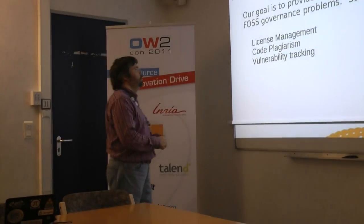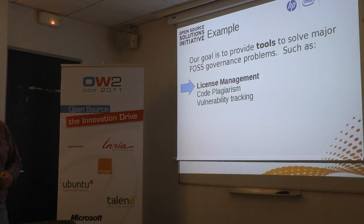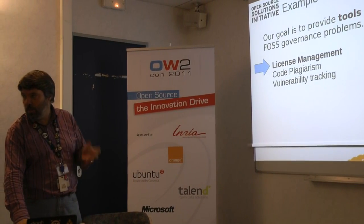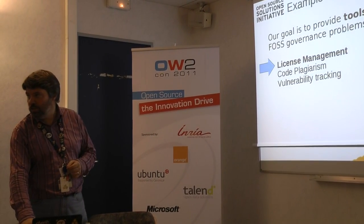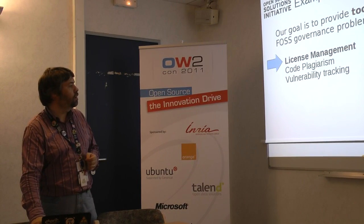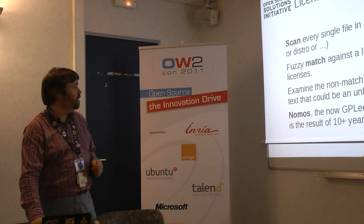So what are we trying to do with the tool? It is aimed to solve some governance problems around free and open source software, such as license management, code plagiarism, and vulnerability tracking. What has really been done up to now is license management. The others are possible by adding agents to Fossology but are not yet inside the project. When I talk about future plans around version 2.0, there may be improvements around those two additional topics after the first quarter of 2012.